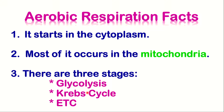There are three stages for aerobic respiration: glycolysis, the Krebs cycle, and ETC, which is the abbreviation for electron transport chain. However, in this lesson, we will not be dealing with these stages.